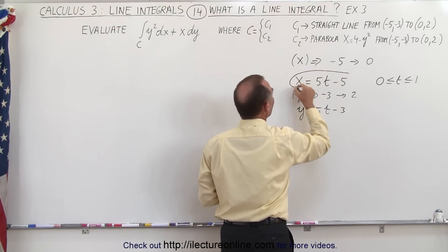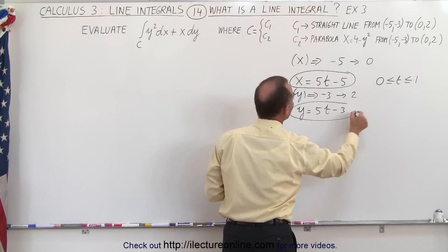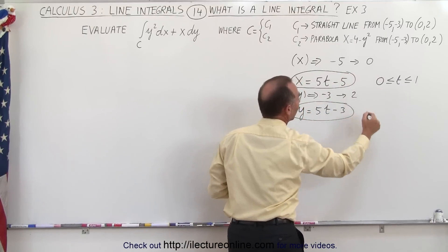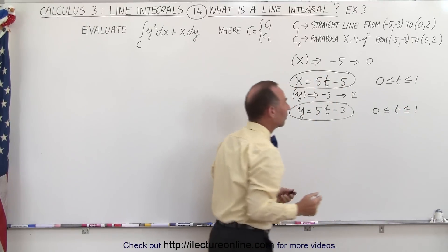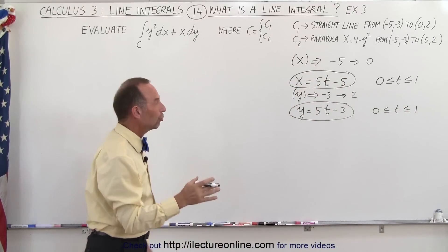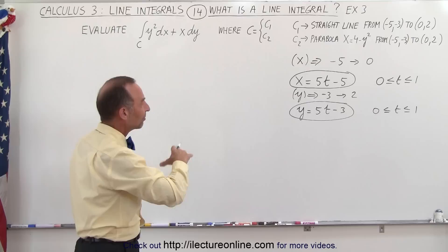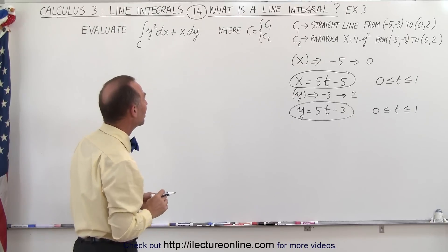So I can convert my x to t like this, and my y to t like this, assuming again that 0 is less than or equal to t is less than or equal to 1. So now I have a conversion from my x and y to my parametric variable t.